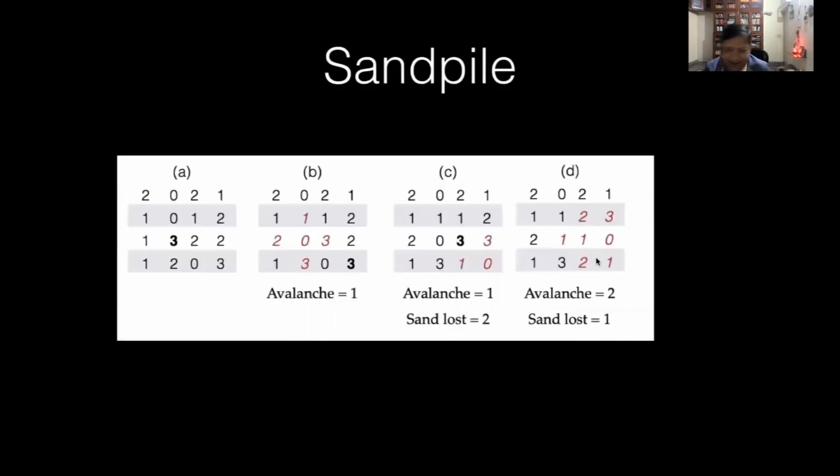The last application of random numbers I'm going to show you is a nice system called sandpile, which demonstrates very nice behavior for self-organized criticality. This is a very simple model by Per Bak and his team from 1987.